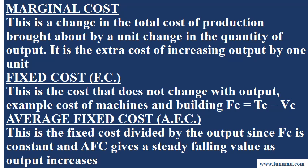Fixed cost (FC) is the cost that does not change with output. Examples include the cost of machines and buildings. FC equals TC minus VC. Average fixed cost (AFC) is the fixed cost divided by the output. Since FC is constant, AFC gives a steadily falling value as output increases.